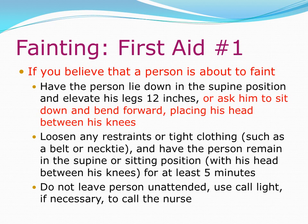Fainting first aid — if you believe a person is about to faint: Have the person lie down in the supine position and elevate their legs 12 inches, or ask them to sit down and bend their head forward, placing their head between their knees. Loosen any restraints or tight clothing, such as a belt or necktie, and have the person remain in the supine or sitting position for at least 5 minutes. Do not leave the person unattended; use the call light to call the nurse if necessary.